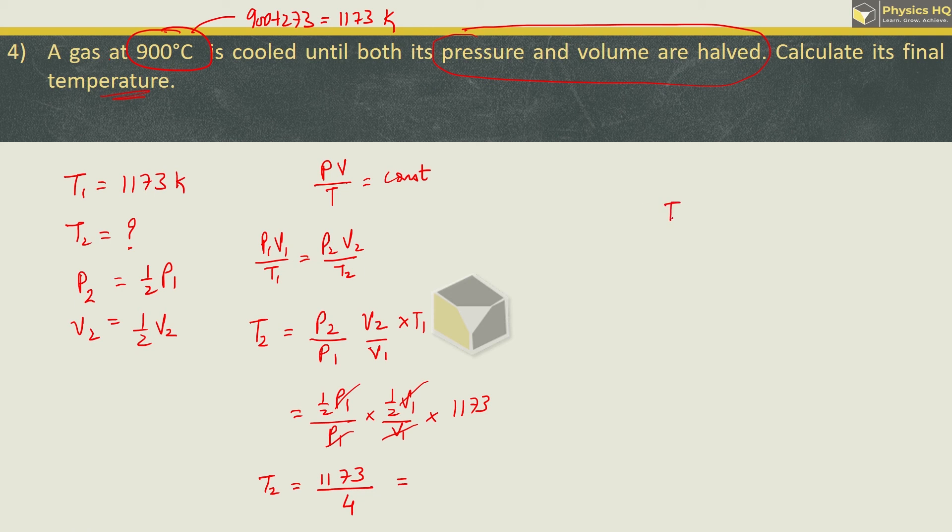One more thing, to convert temperature in Kelvin what we do is temperature in Celsius plus 273. To be precise we need to add 273.15. So when you divide this you will get the final answer as 293.28 Kelvin. Hope you all understood this.